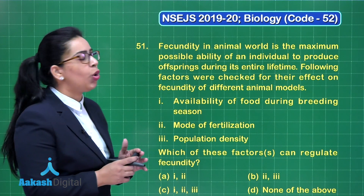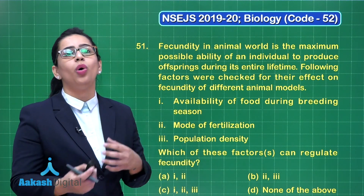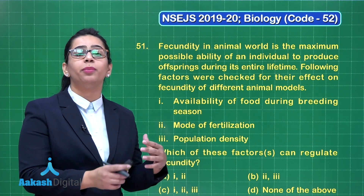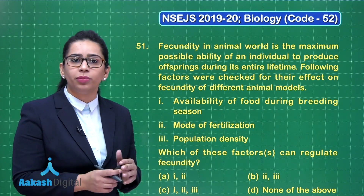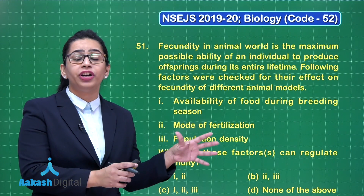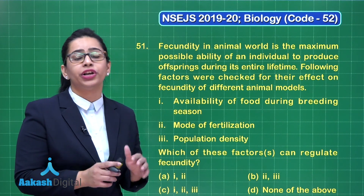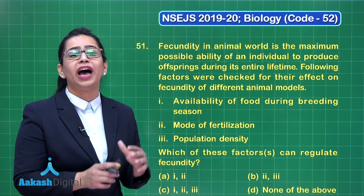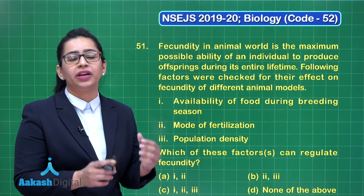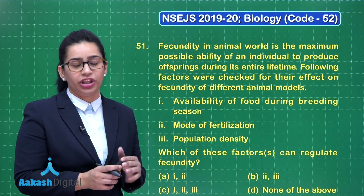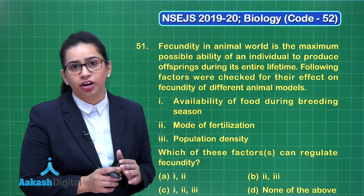The second factor is mode of fertilization. Animals can go for external or internal fertilization. In external fertilization, gametes are released outside the body in water or a surrounding medium, and the parents are free to undergo another cycle of breeding. In internal fertilization, organisms contribute much more because the offspring develops inside the parent body, which takes a long time.